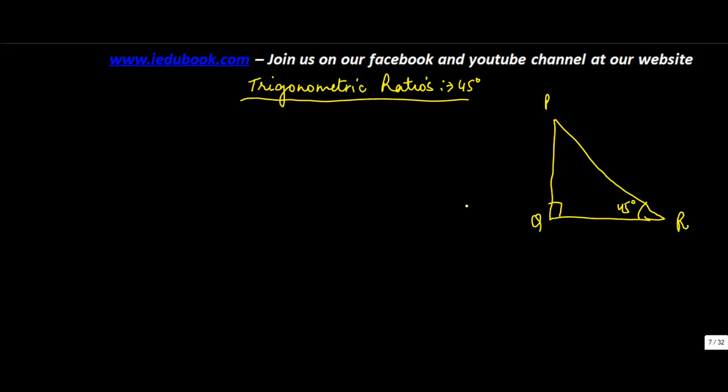Let's say R is equal to 45 degree, then angle QPR is equal to 45 degree as well. So this angle will also be equal to 45 degree. Why? Because the sum of three angles is equal to 180 degree. So if this is 90, this is 45, this is 45.